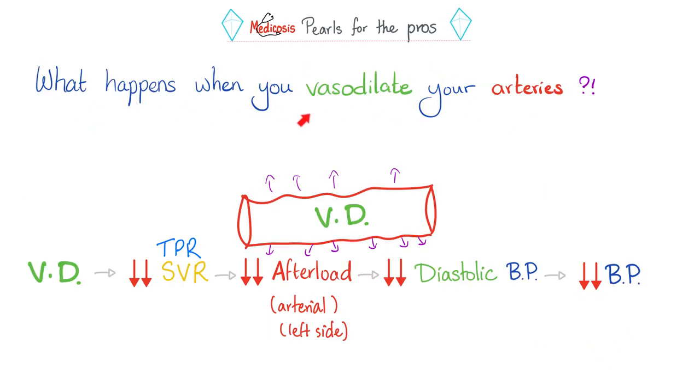What happens when you vasodilate an artery or an arteriole? Whenever you vasodilate, you increase the surface area, and you decrease the resistance. When you decrease the resistance, you will decrease the resistance after the heart, and this will lower your diastolic blood pressure, which will decrease your blood pressure.